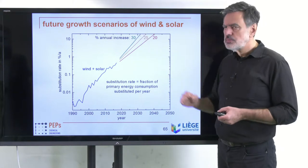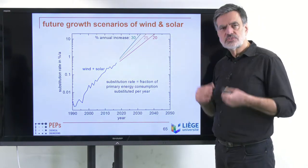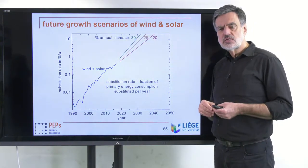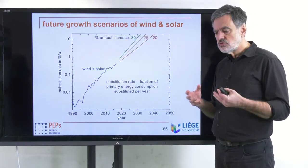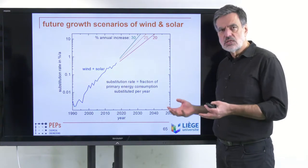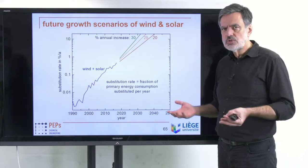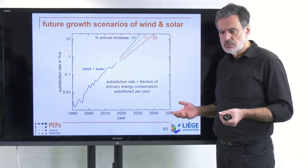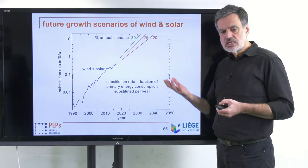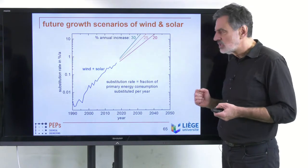This exponential increase cannot go on forever — if we reach 10% substitution, that would mean replacing 10% of all primary energy systems with sustainable energies in a single year, which is a very large number we presumably won't reach. So there have to be estimates of the maximum substitution rate that is possible, and we need to limit it to that.